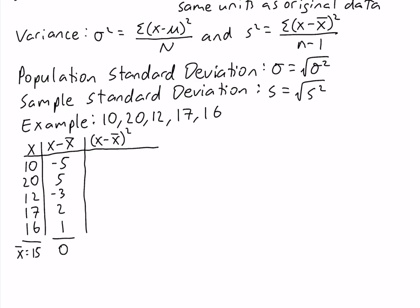Our last column is going to be the squared deviations about the mean. Negative 5 squared is 25. 5 squared is 25. Negative 3 squared is 9. 2 squared is 4. And 1 squared is 1. Now we want to sum this column and we get 64.